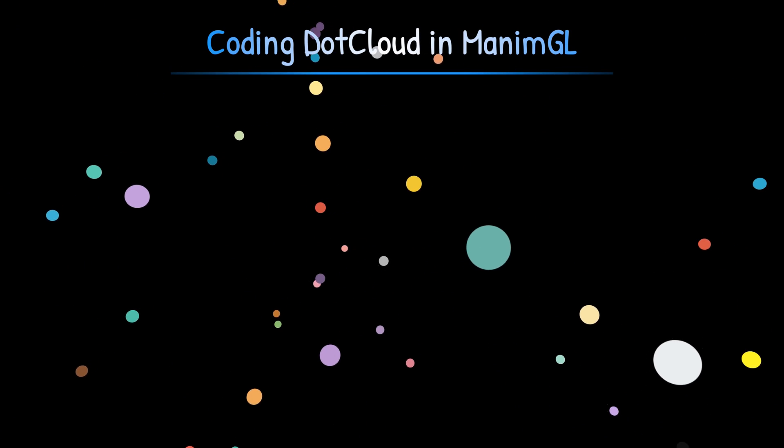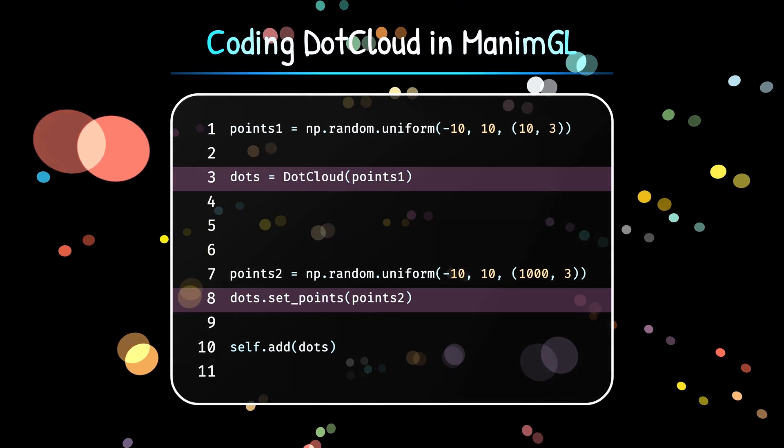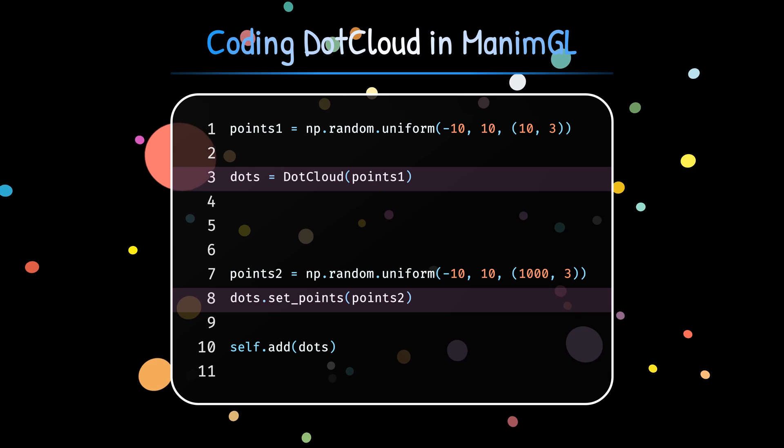To use .cloud, all we need is a set of points arranged in the 3D space. And simply, we pass those points coordinates to the .cloud. And that's it, we are done.